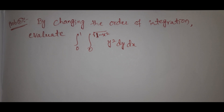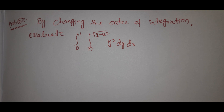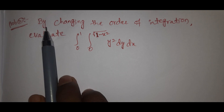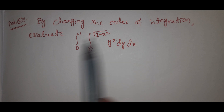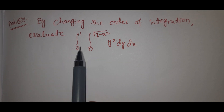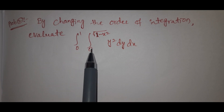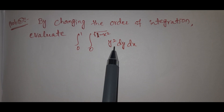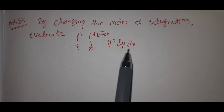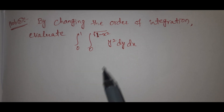Hi viewers and welcome to Rajesh Lakalu. Today our topic is change the order of integration problem. By changing the order of integration, evaluate the integral from 0 to 1, integral 0 to root of 1 minus x squared, of y squared dy dx.